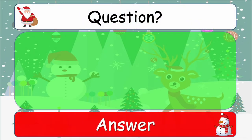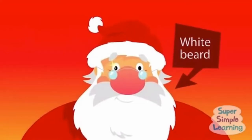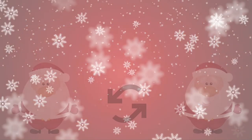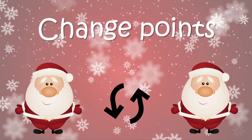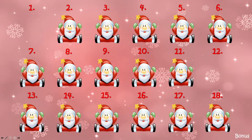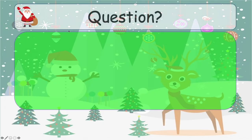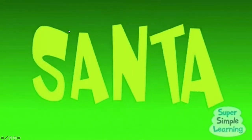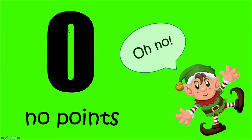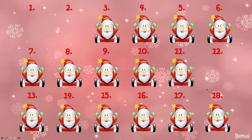Let's choose number 12 — question and answer. Number 12 is the change point slide. There's a short video animation for a few seconds, then it disappears and the two Santas change sides. That is the change points. To go back to the main question slide, all you have to do is click on one of the Santas. Let's choose number two — question and answer. This one is zero points, and there are a few zero point slides in this game. Click on the elf to go back to the main question slide.